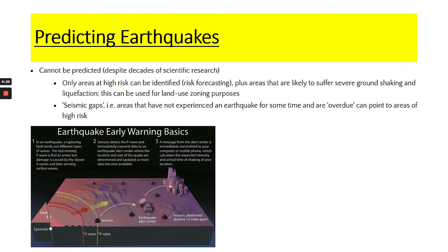Moving on to predicting earthquakes, volcanoes and tsunamis. Earthquakes are very difficult to predict — in fact, they cannot really be predicted even with scientific research. What we can do is identify high-risk areas using risk forecasting for areas likely to suffer severe earthquakes due to their plate tectonic activity. We can use this to land zone, future-proof where people live and reduce impacts overall. We can also look at seismic gaps — a gap in years since an earthquake has been experienced — meaning places can become overdue and are therefore seen as high risk.